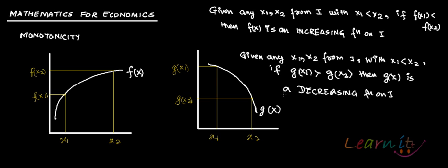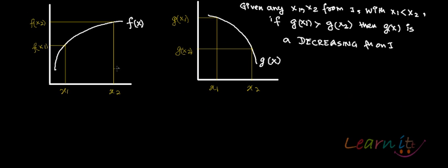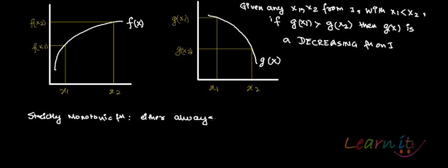Monotonicity refers to the tendency of a function to increase or decrease over its range — either the function is increasing, or the function is decreasing, or it could be both over different intervals. A strictly monotonic function will be either always increasing or always decreasing.